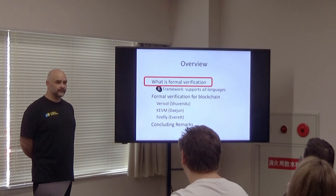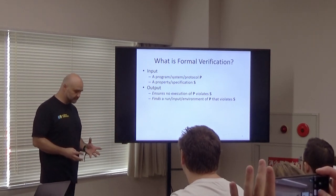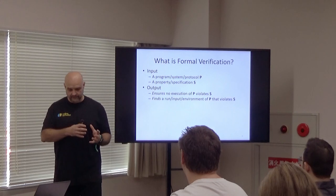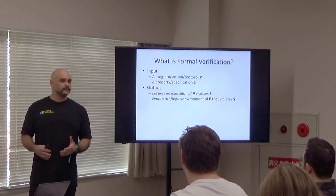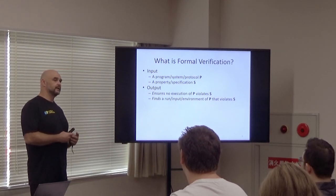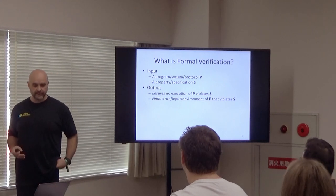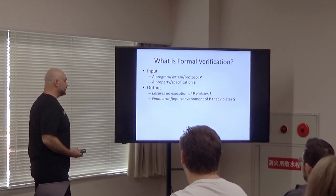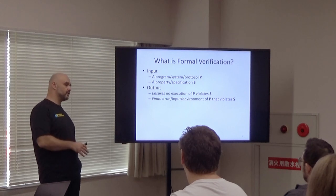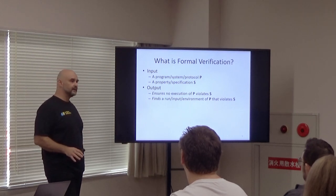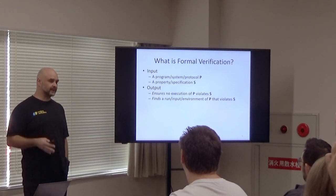What is formal verification? At a very high level, formal verification takes as input a program P — something that computes, that evolves from one state to another — and a specification S, which describes properties of that program. The output is whether program P indeed satisfies specification S, meaning that no matter how the program is executed, under whatever input, environment, or non-determinism, the program will satisfy S.